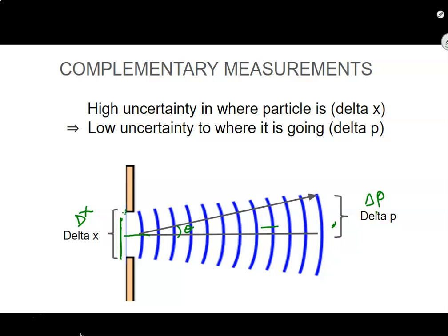Where you are and where you're going. So in this particular case, if we have a big gap, we have a high uncertainty in where the particle is. In other words, delta x is relatively large. However, we have a lower uncertainty or low uncertainty in where it's going, which is basically a way of saying that the diffraction angle is fairly small. In other words, the range of possibilities is fairly small because it's roughly the same size as the gap.